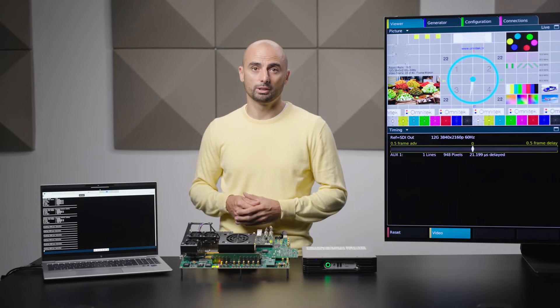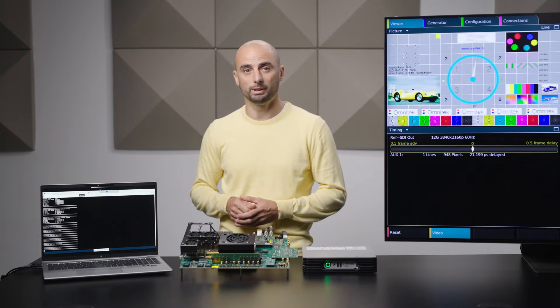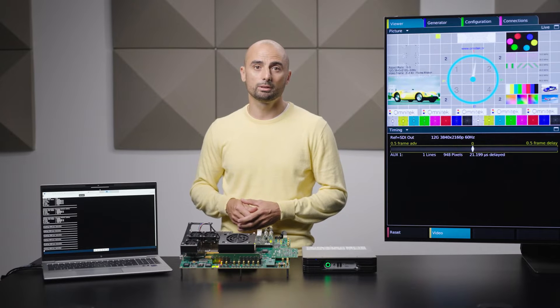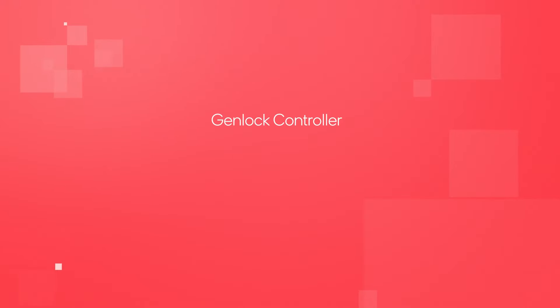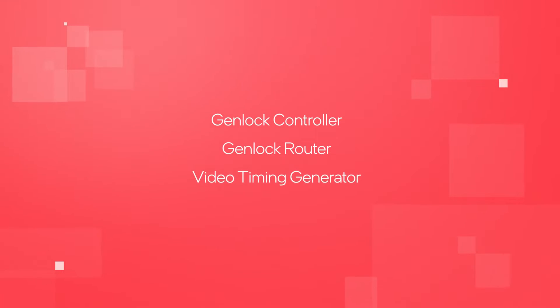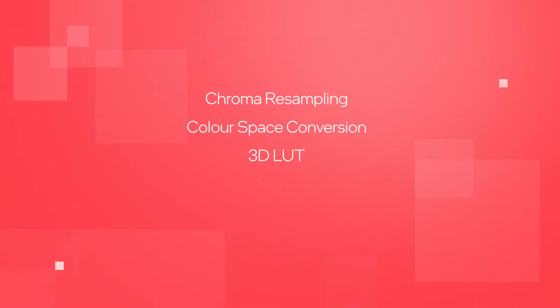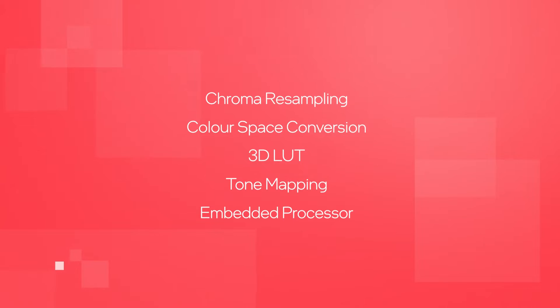This demonstration design employs SDI video connectivity IP and Intel FPGA video and vision processing IP cores such as the genlock controller, genlock router, and video timing generator. It also uses additional video conditioning cores such as chroma resampling and color space conversion, a 3D lookup table, tone mapping, and an embedded processor for overall control. With its off-the-shelf video IP cores, the Intel FPGA video and vision processing suite enables the creation of custom video processing pipelines with high performance, low latency processing, and a smooth design experience.